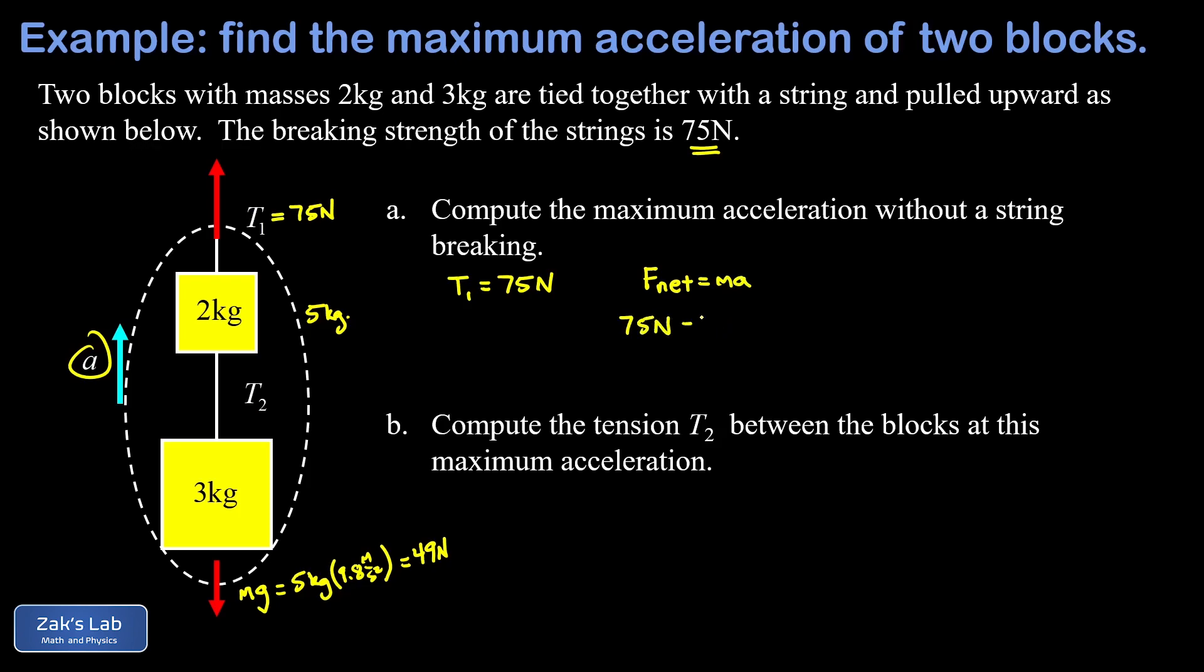And the net force is 75 newtons pointing up from that tension minus this 49 newtons pointing down - that's the force of gravity pulling down on this thing - that's all equal to the mass which is five kilograms times our unknown acceleration a. Doing the subtraction on the left hand side and then dividing by five, we find an acceleration of 5.2 meters per second squared.